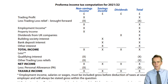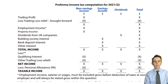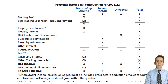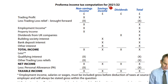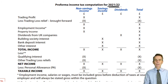In our first lecture together on chapter two, we looked at the pro forma income tax computation. We saw first of all that we needed a period of time for which it would be prepared — that was the tax year, running from the 6th of April one year through to the 5th of April the next year.